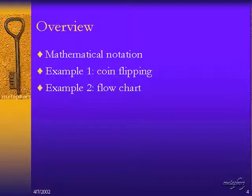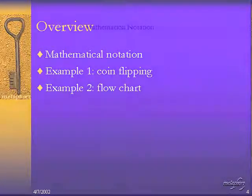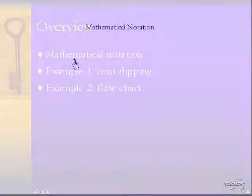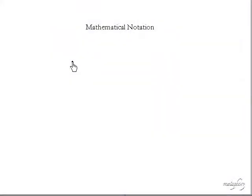Next we're going to go over examples of mathematical notation with two examples: one, coin flipping, and number two would be a flowchart using a Markov model. The mathematical notation for Markov chain begins with the conditional probability of achieving a particular state based on the previous state.